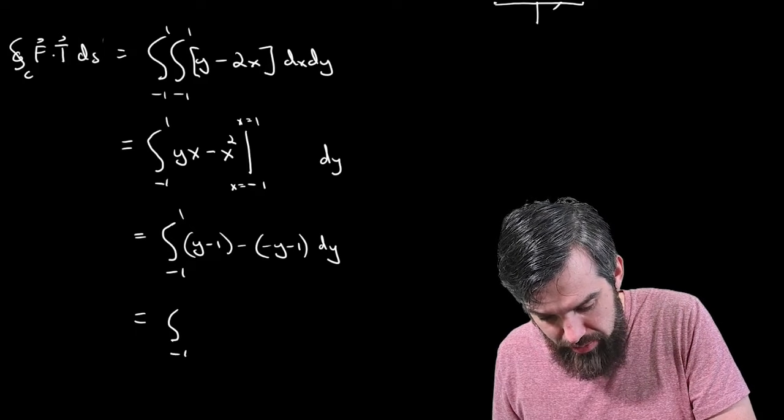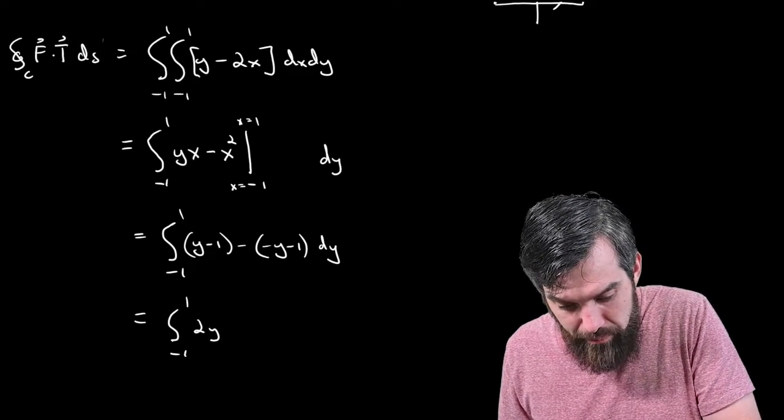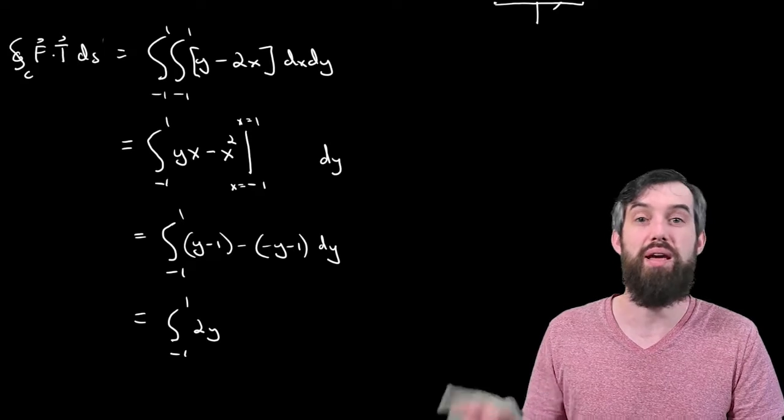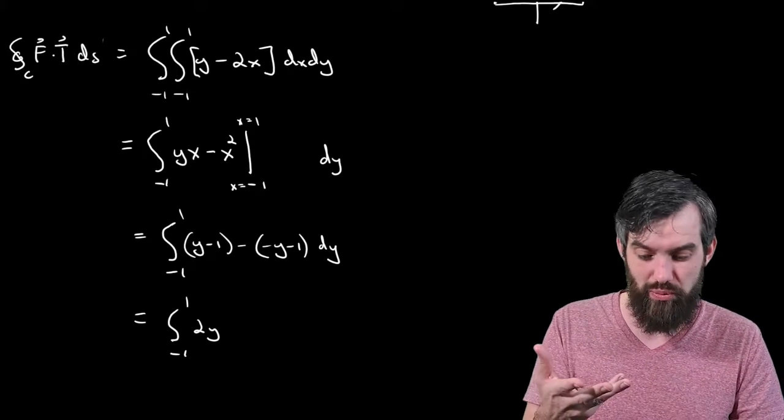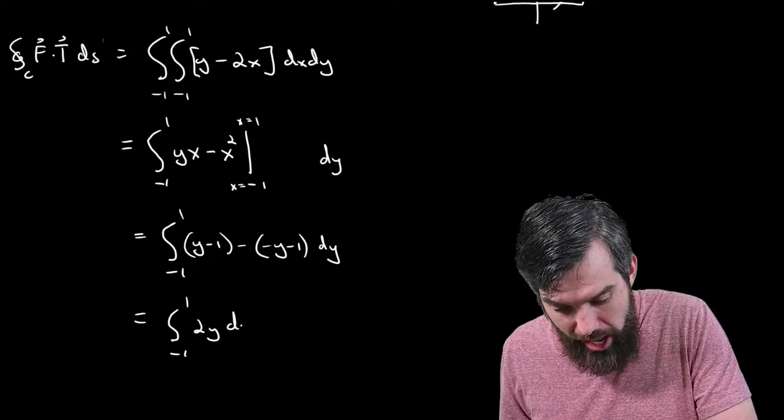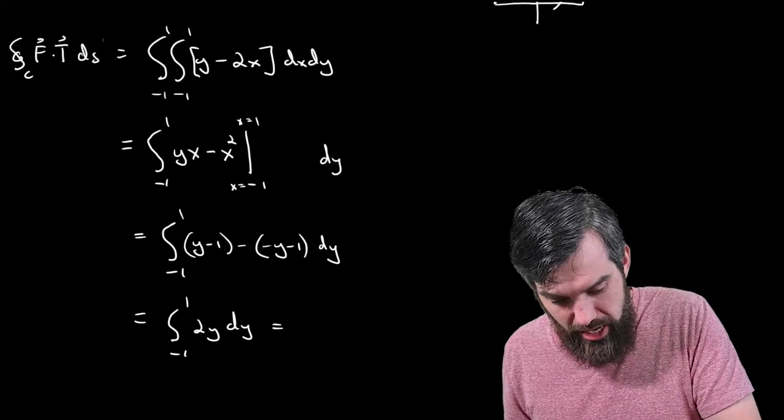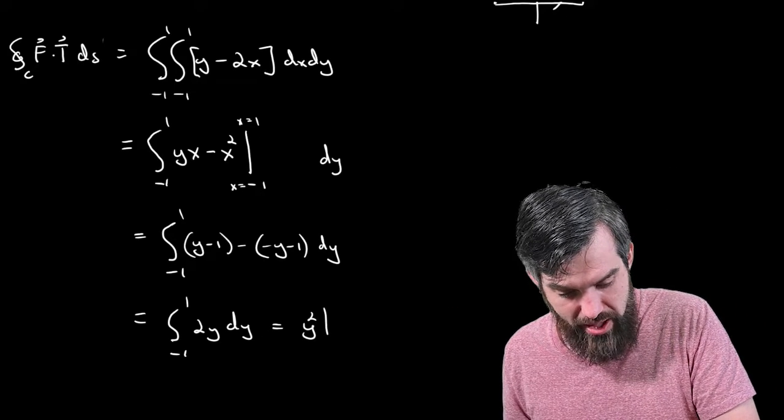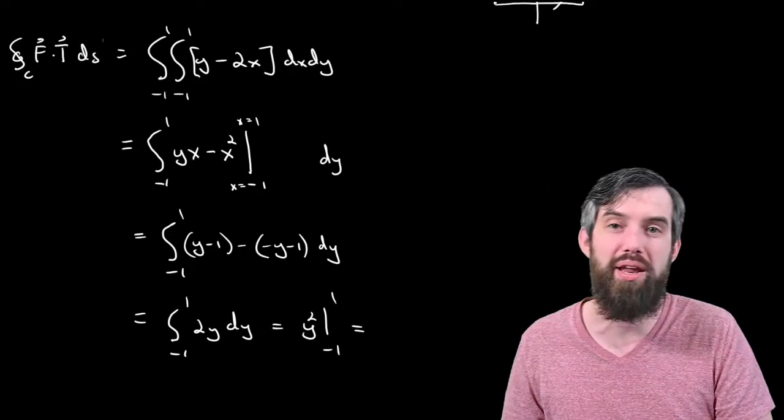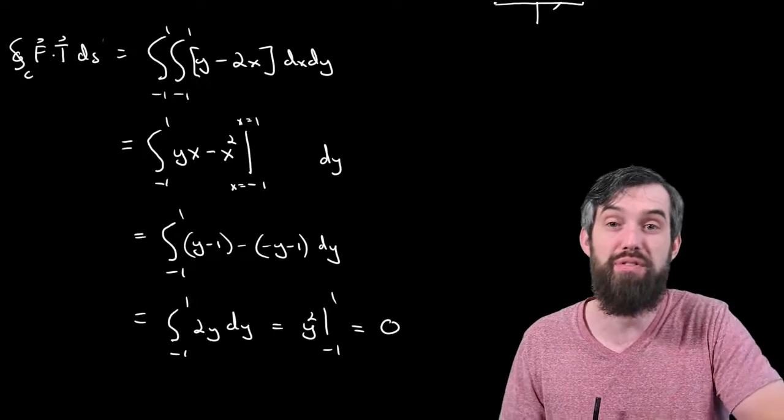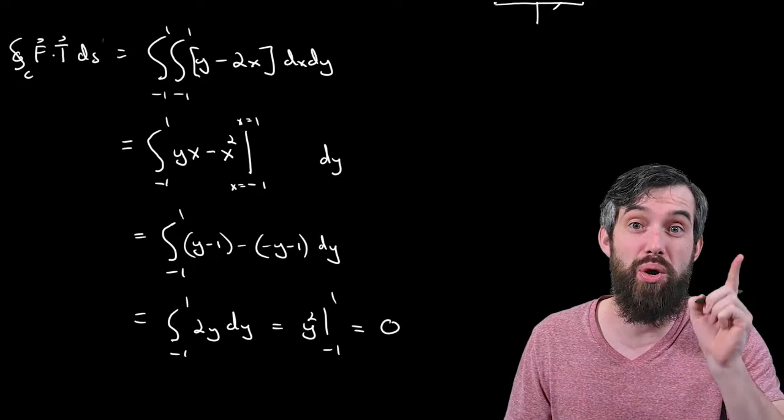And if I prefer, I can clean this up. So it looks like I've got a 2y. And then I have a minus 1 and then a minus minus is a plus 1, so that's it, 2y. And then, of course, this integrates out to being y squared between the values of minus 1 and 1, which is just going to give me the value of 0. This has 0 circulation.